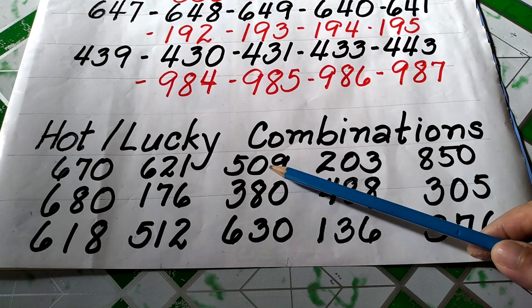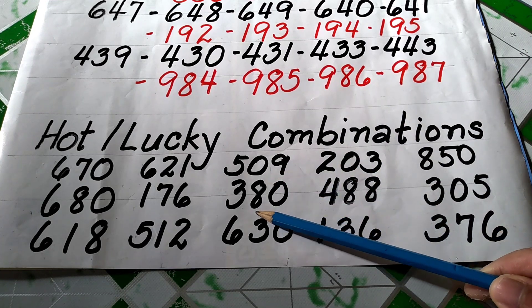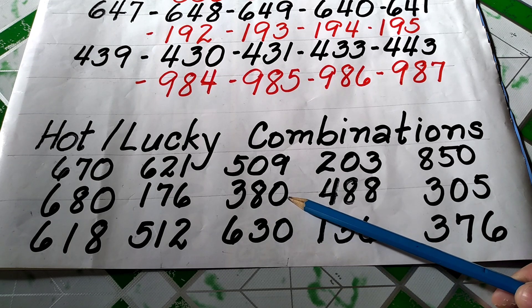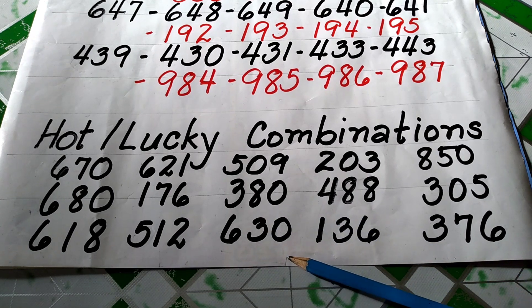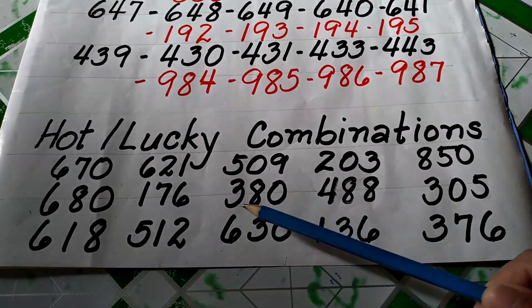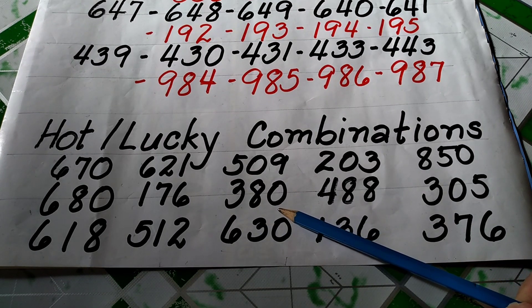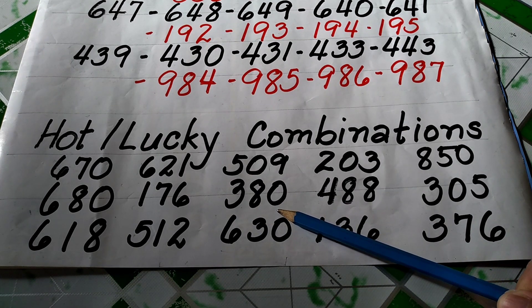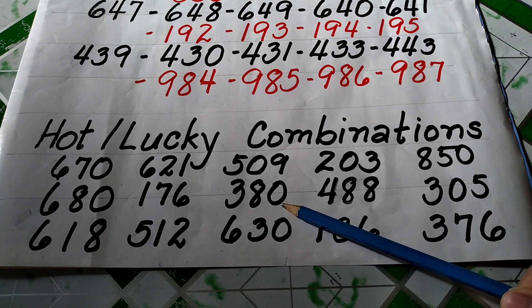Dito naman, 5-0-9, 3-8-0, 6-3-0. Malapit na ito. Ito, lumabas yung kanyang unang kombinasyong 0-3-7 sa STL-V. Baka sa 3D yung kasunod.